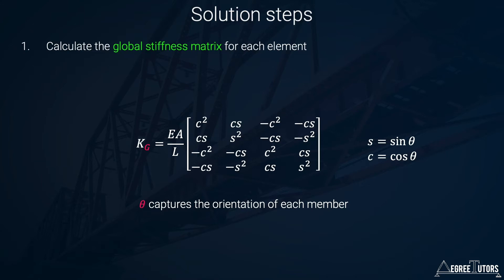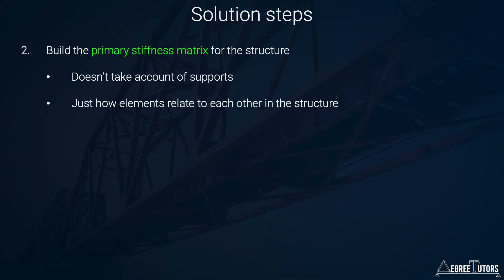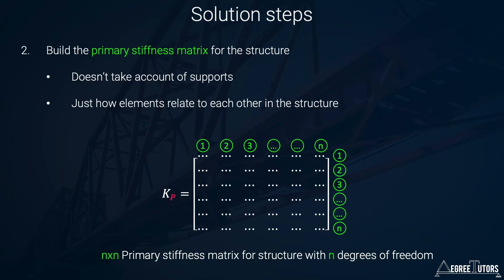Because the global stiffness matrix encodes the orientation of the member, we can directly combine these together to form what's called the primary stiffness matrix — that's step two. We build this primary stiffness matrix for the structure by collecting together the element global stiffness matrices. It doesn't account for supports, just how the elements relate to each other. It's a square n-by-n matrix where n is the number of degrees of freedom in the structure.